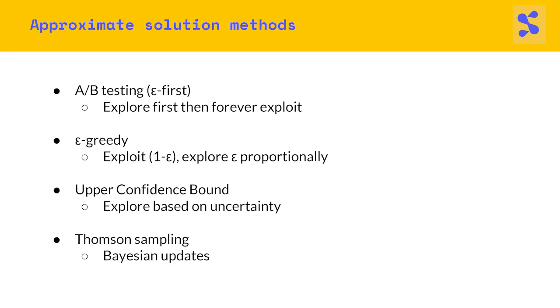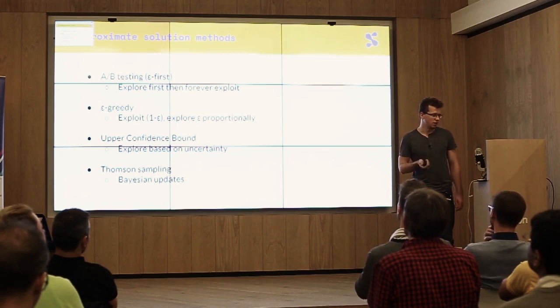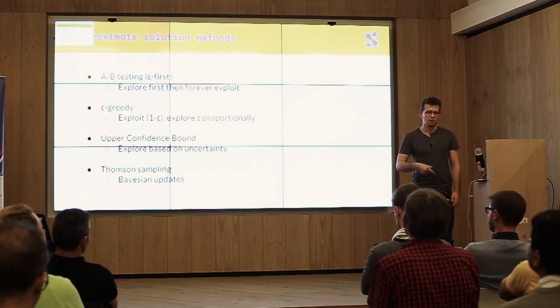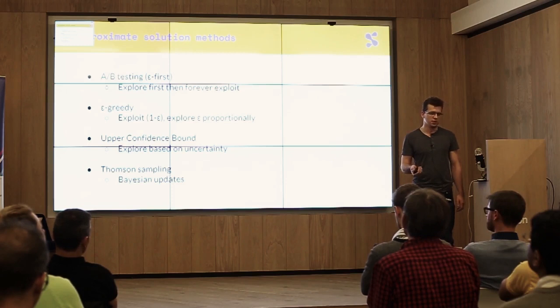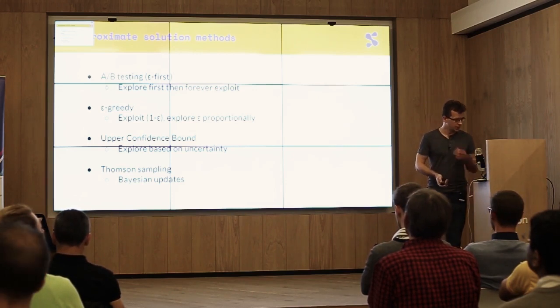My favorite one is Thomson sampling because it's Bayesian. So the idea is that you start with a prior distribution over the mean of the rewards of the choices. And then after each trial, you update your beliefs, you get a posterior distribution, then you draw samples from the posteriors and make your choices accordingly. And it works very well in practice.